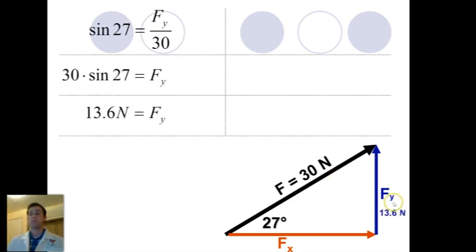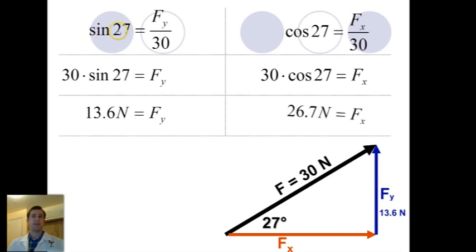So if we wanted to solve for the Y component, the blue, we look over here. We use sine of 27 equals our opposite over hypotenuse. Multiply by 30 on both sides to get FY alone. And when we plug this into the calculator, we get 13.6 newtons is our Y. So then we come over here and we write down 13.6 right next to FY. And then to solve for our FX, because FX is the adjacent side, we're going to use our cosine, where the cosine of the angle is equal to FX over the hypotenuse. Once again, we multiply by 30 on both sides to get FX all alone. And then we plug this into the calculator, and that gives us the 26.7. And then we write that down by the FX. And that way we can solve for the components of all of our forces.